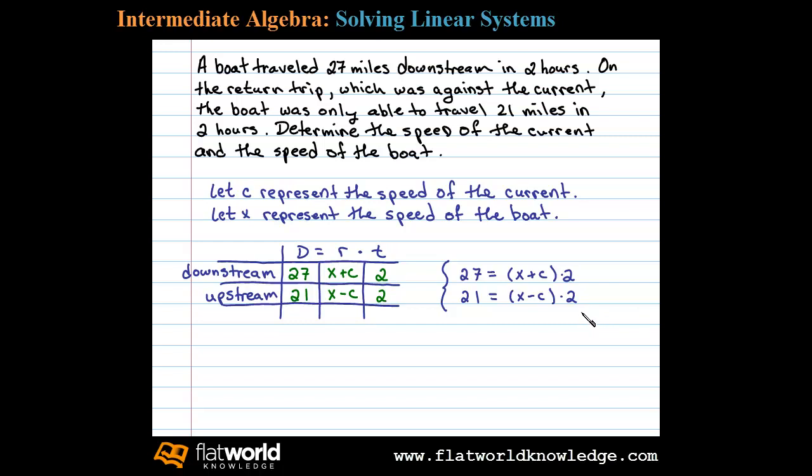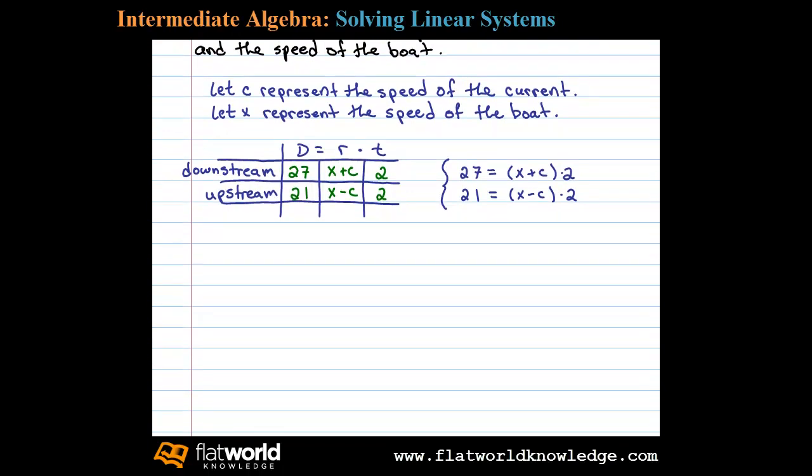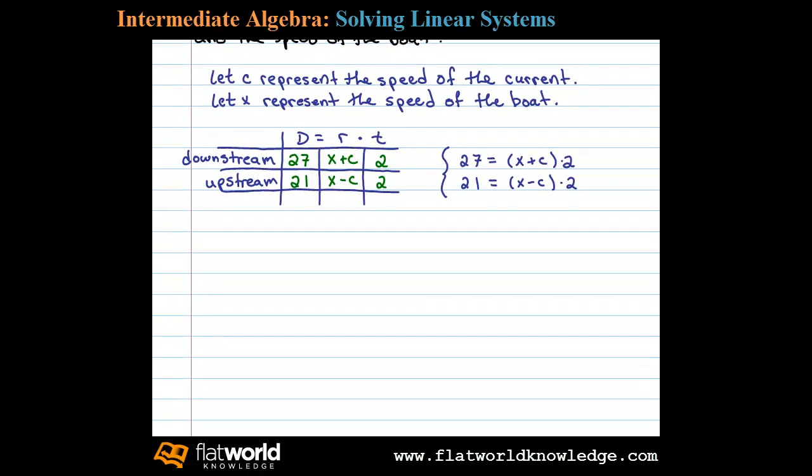Let's begin by distributing. That'll give us the equivalent system: 27 equals 2X plus 2C. Similarly, 21 will equal 2X minus 2C. At this point you can see the variable C is lined up to eliminate.